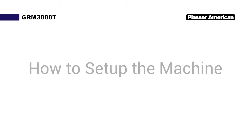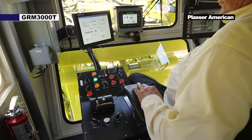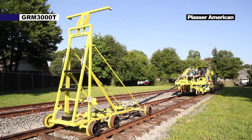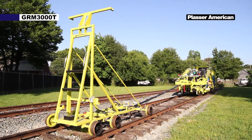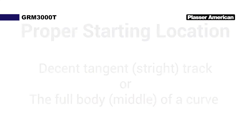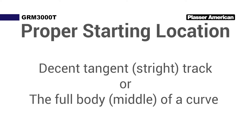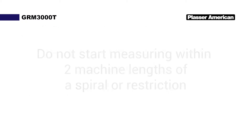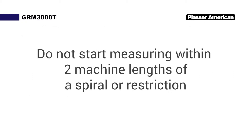Let me show you how to set up the machine. Make sure the machine is in work mode. All buggies are down, clamp frame and tamping units are up and locked. You need to select the proper starting location. Proper location would be decent tangent track or in the full body of a curve. Do not start measuring within two machine lengths of a spiral or restriction.